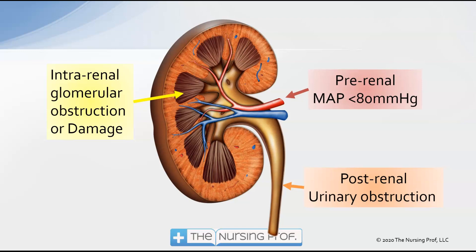Prerenal dysfunction means we have a mean arterial pressure that has been decreased — this could be due to a lack of fluid such as hypovolemic shock, or due to renal artery constriction or stenosis decreasing blood flow to the kidney, resulting in decreased flow and inadequate perfusion and filtration of the nephron. Post-renal means we have urinary obstruction — we're obstructing the ureter, urine backs up into the kidney, causing reverse pressure on the filter so we're not getting adequate filtration.